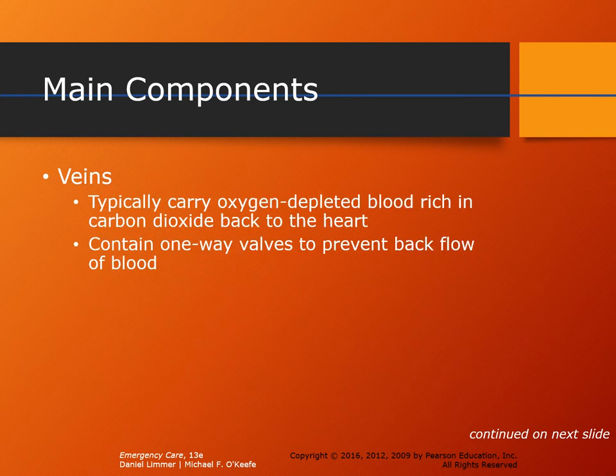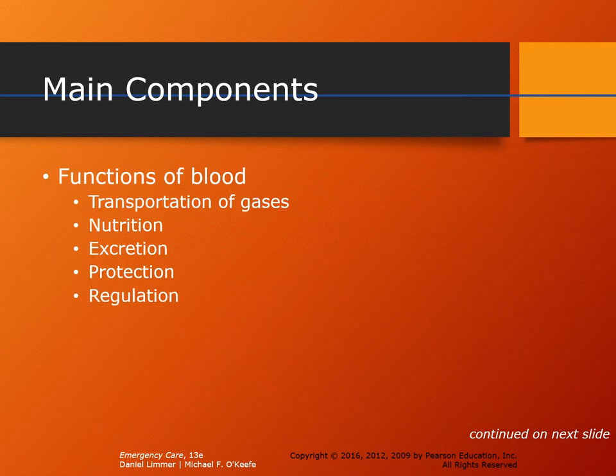Veins typically carry oxygen-depleted, or deoxygenated, blood back to the heart. There is one exception: the pulmonary vein actually transports oxygenated blood. There is also one additional vein that carries oxygenated blood — that's found in the umbilical vein — but that's something we talk about more with obstetrics and childbirth.